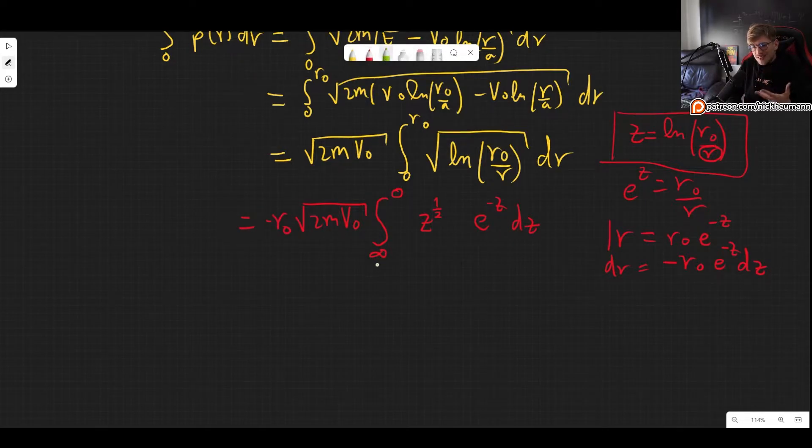Now this integral may look familiar and in fact I hope that it does because this is almost what is called the gamma function of maybe let's call it t. The gamma function we can write it in the integral form and it goes from 0 to infinity of x to the t minus 1 e to the minus x dx.